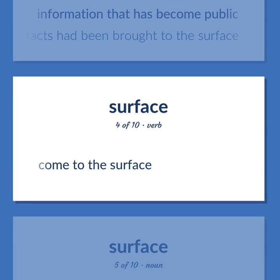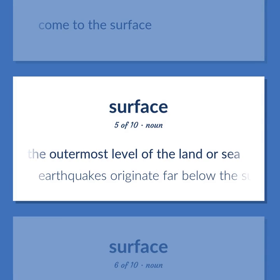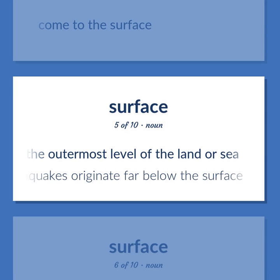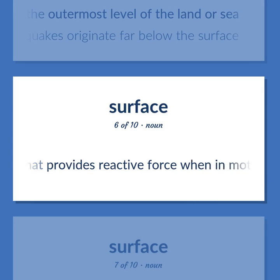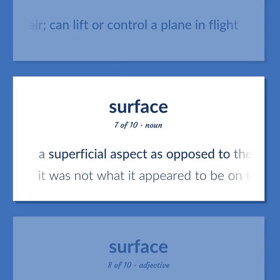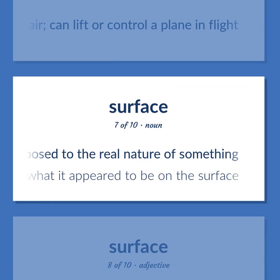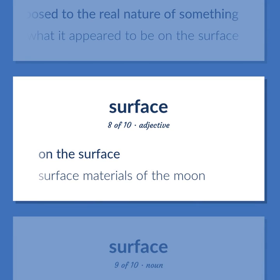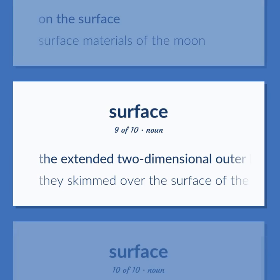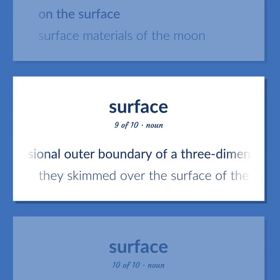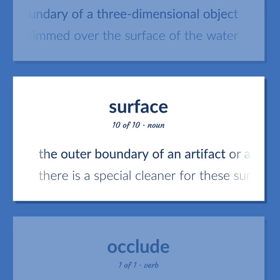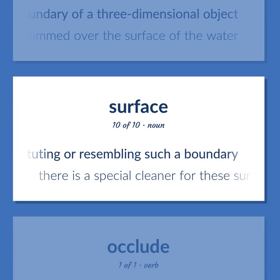Come to the surface. The outermost level of the land or sea. Earthquakes originate far below the surface. A device that provides reactive force when in motion relative to the surrounding air; can lift or control a plane in flight. A superficial aspect as opposed to the real nature of something. It was not what it appeared to be on the surface. Surface materials of the moon. The extended two-dimensional outer boundary of a three-dimensional object. They skimmed over the surface of the water. The outer boundary of an artifact or a material layer constituting or resembling such a boundary. There is a special cleaner for these surfaces.